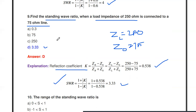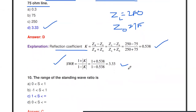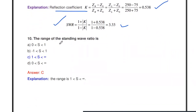So in the previous question the reflection coefficient was directly given and we calculated SWR, but in this problem load impedance and characteristic impedance were given. To find SWR, first calculate k, then substitute k into the SWR formula to get the answer. This is the second type of problem.